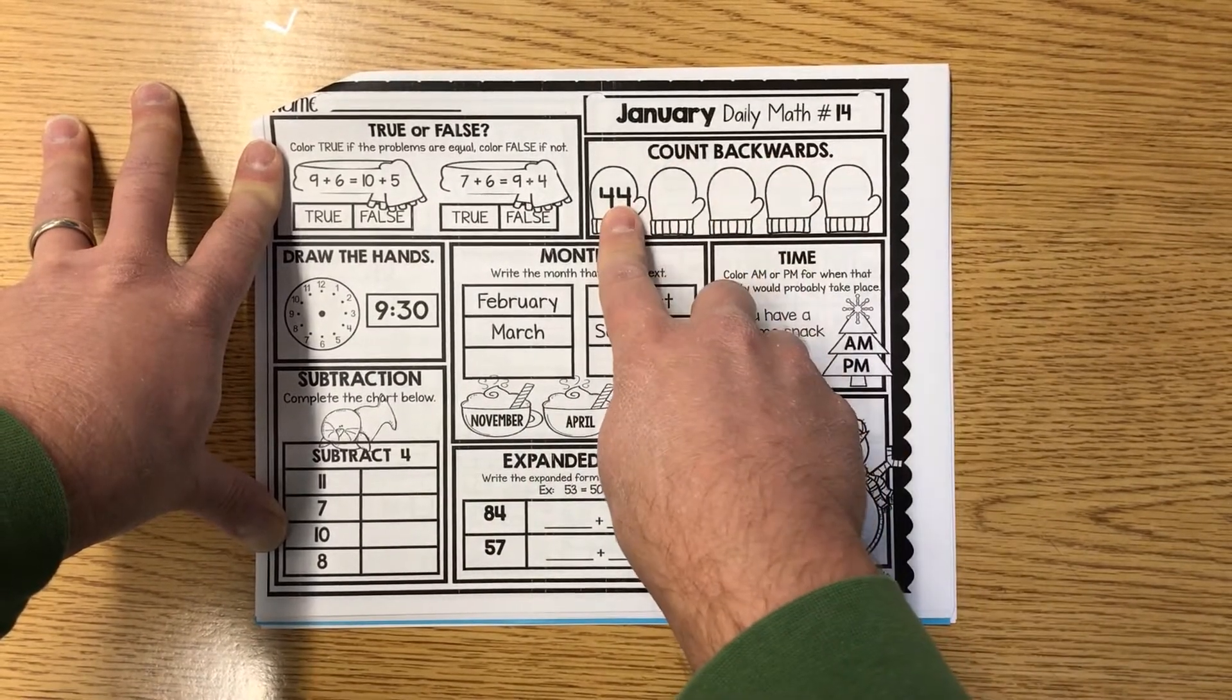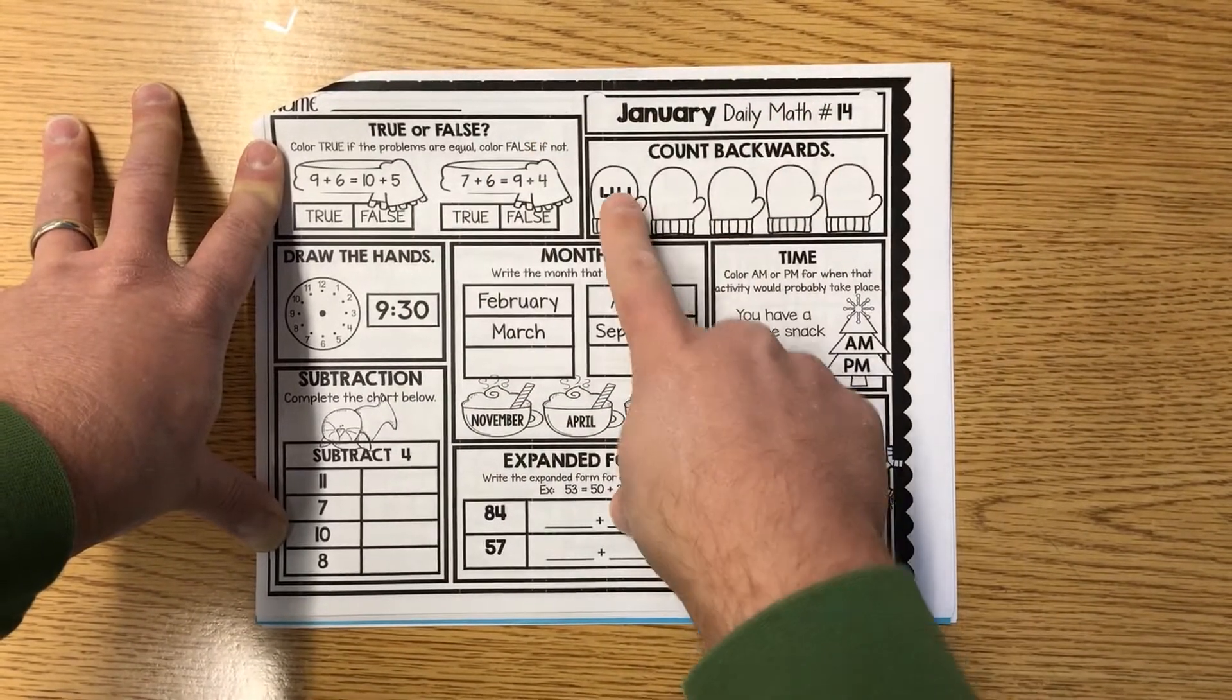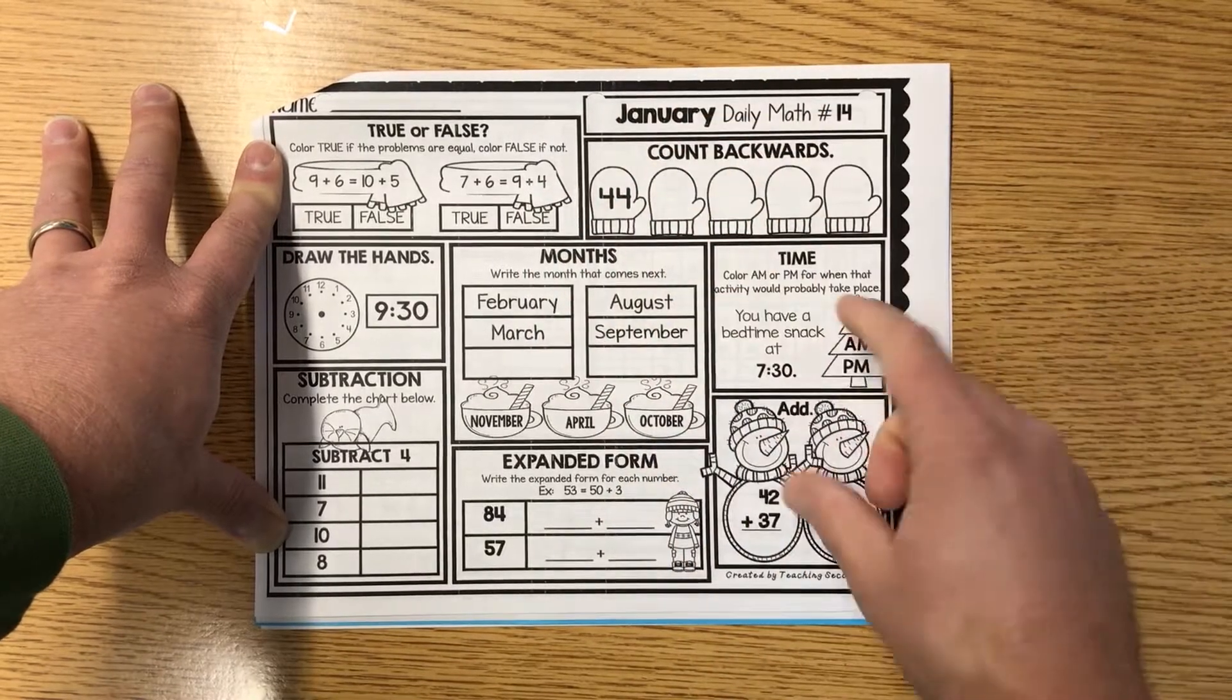Count backwards. Here's 44. They want you counting down by ones. Start counting down by ones, even though they're going to the right. It looks weird. 44, 43, et cetera, et cetera, et cetera.